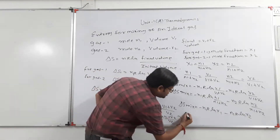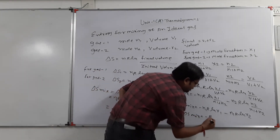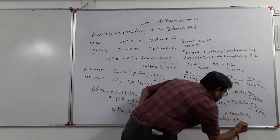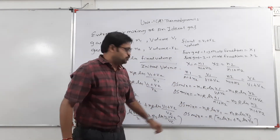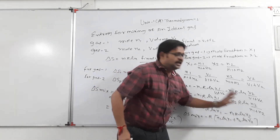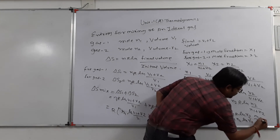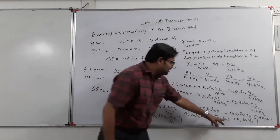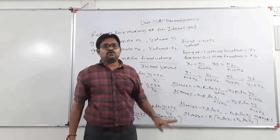So delta S mixing is equal to -n1 R ln(x1) - n2 R ln(x2), which can be written as -R(n1 ln x1 + n2 ln x2). This equation is applicable when n1 + n2 is the total number of moles.